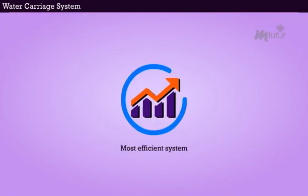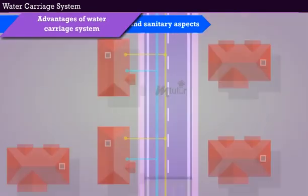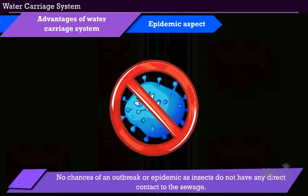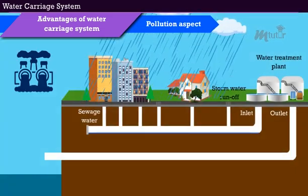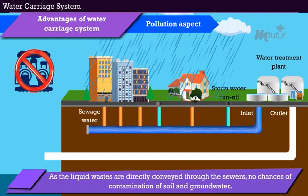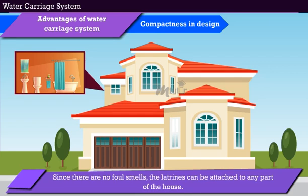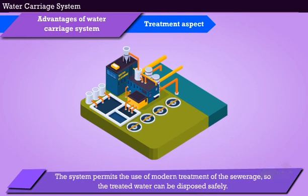The major disadvantages of the water carriage system are the large initial installation cost and the requirement of a large quantity of water. However, this is the most efficient and hygienic system. Hygiene and sanitary aspects: the system is very hygienic as wastes are conveyed through closed conduits. Epidemic aspect: there are no chances of an outbreak or epidemic because flies and other insects do not have direct contact with the sewage. Pollution aspect: as liquid wastes are directly conveyed through sewers, there are no chances of contamination of soil and groundwater. Compactness in design: since there are no foul smells, latrines can be attached to any part of the house. Treatment aspect: the system permits the use of modern methods of treatment of the sewerage.